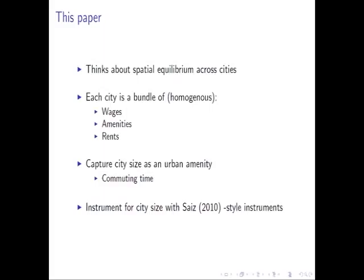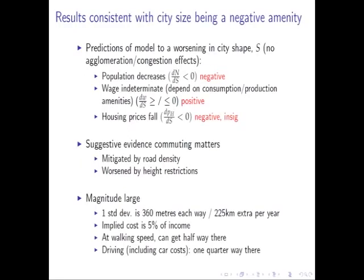We use instruments similar to the Saiz instruments for thinking about housing elasticities depending on geographical constraints. Here, geographical constraints are going to constrain how a city can expand. The model is quite straightforward and nice. Depending on whether city shape is on the consumption side or the productivity side, a worsening city shape should decrease population, perhaps increasing the wage if on the consumption side, or decreasing the wage and making it cheaper to live there if on the production side. The results are consistent with this being a consumption amenity.